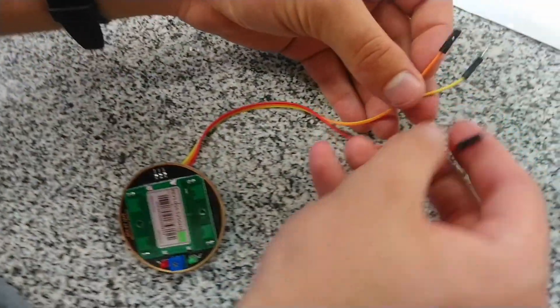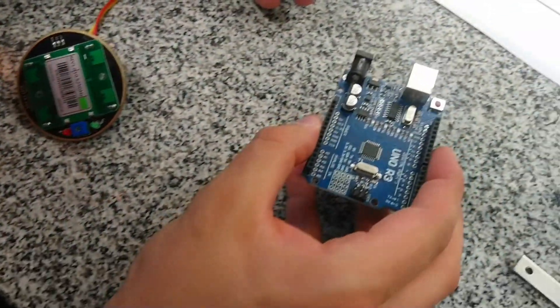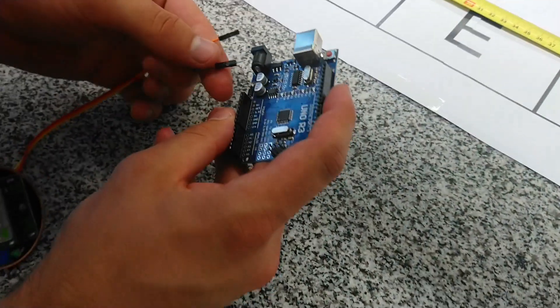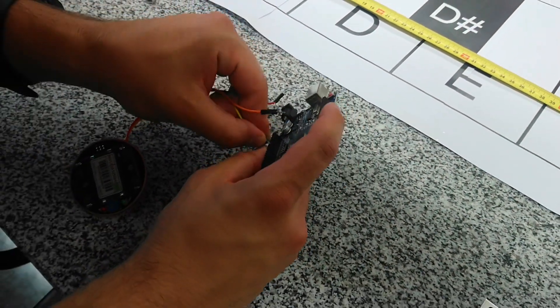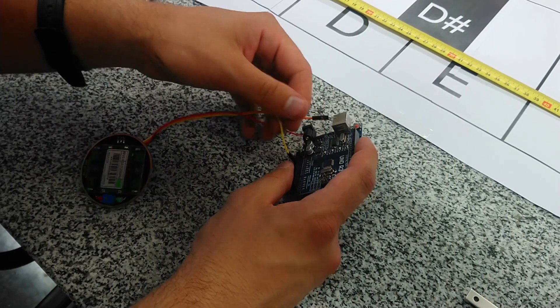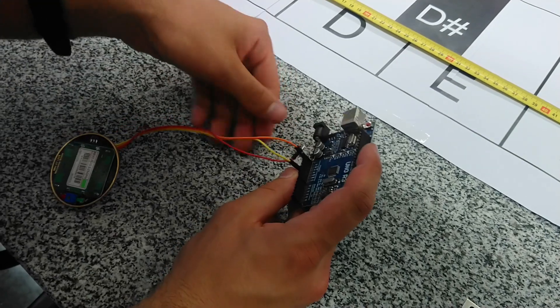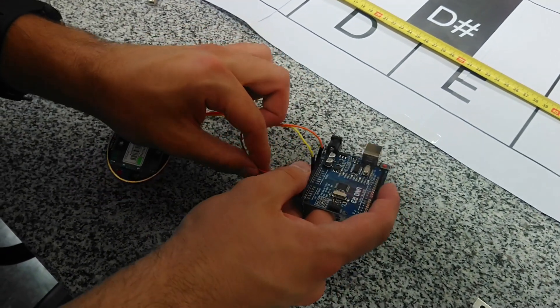The assembly of the system is quite simple. Firstly, the Doppler radar HB100 needs to be connected to the Arduino. The radar's pins should be connected to Arduino as following: OUT to A0, VCC to 5V and GND to GND. All information about the assembly can be found in the instruction.